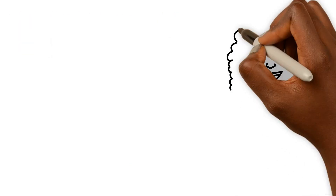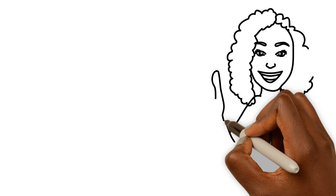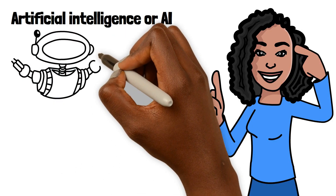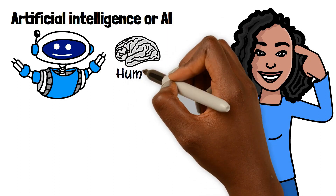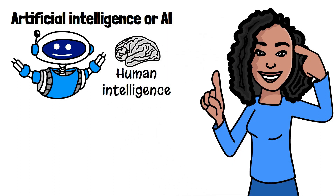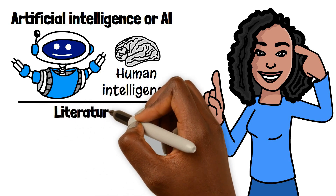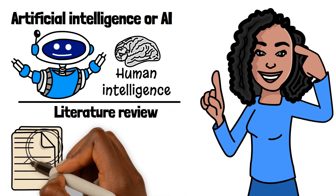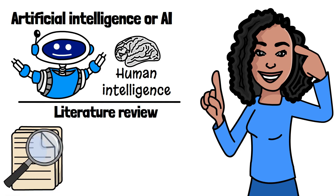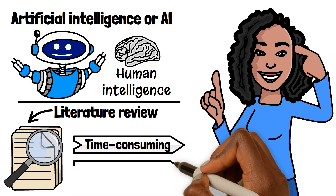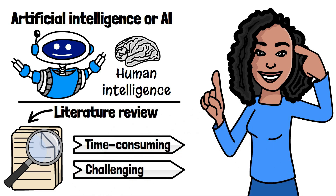In today's video I'll reveal how to write a literature review fast using artificial intelligence. Before we dive in, let's talk about the basics. Artificial intelligence, or AI, refers to the ability of machines to perform tasks that would typically require human intelligence. A literature review, on the other hand, is a critical evaluation and synthesis of research articles related to a specific topic. It's a key part of any research project, but it can be time consuming and challenging to complete.